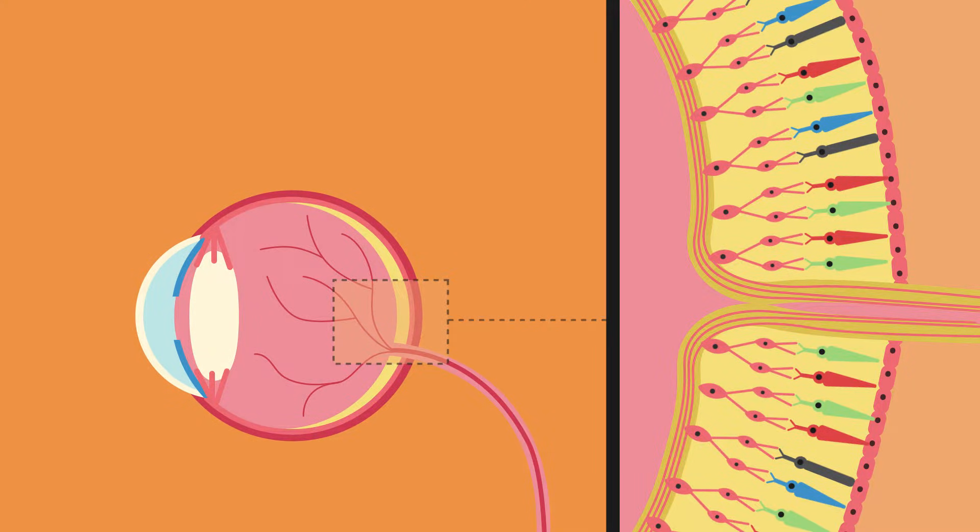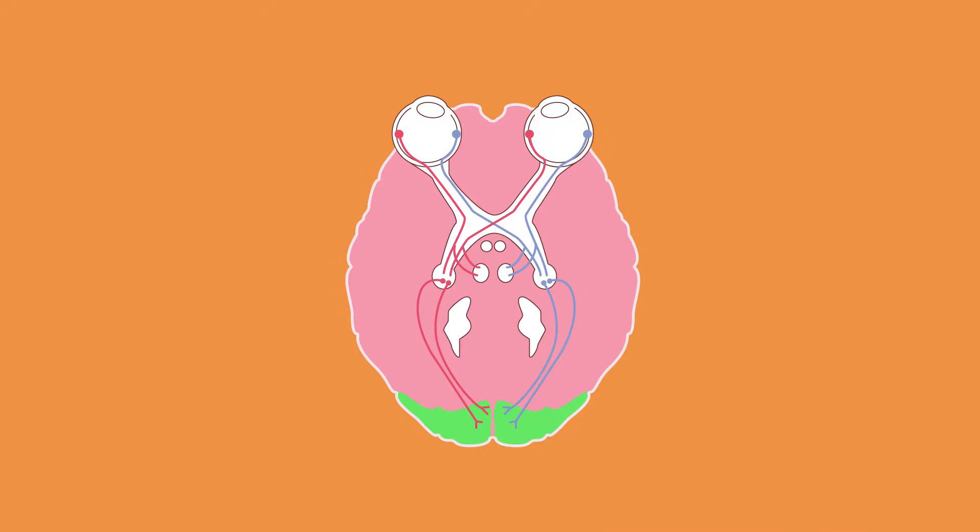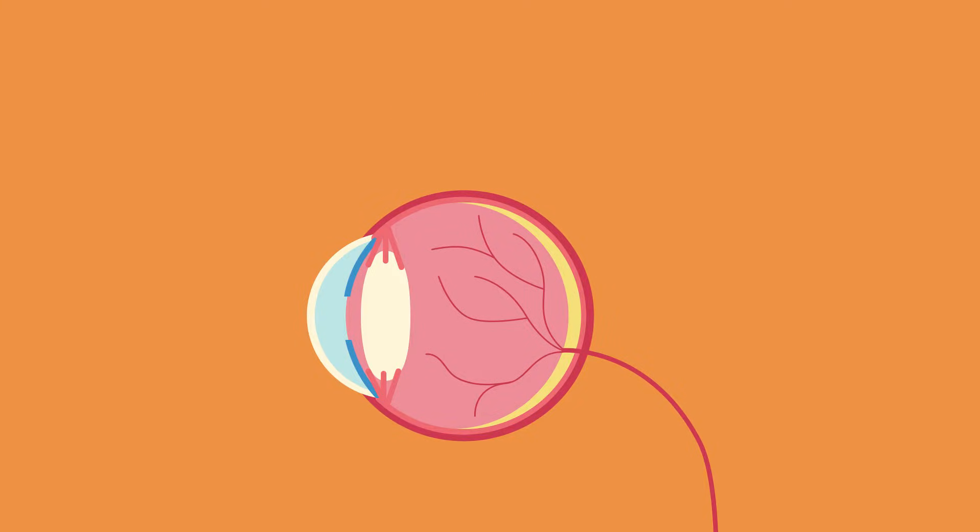The eye contains special cells that receive the incoming light energy and convert it into electrical impulses. These electrical impulses are then relayed along the optic nerve to our brain. So let's have a look at the special parts of the eye that enable us to see.